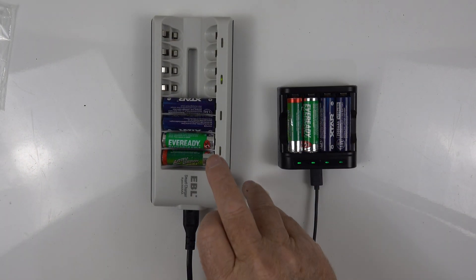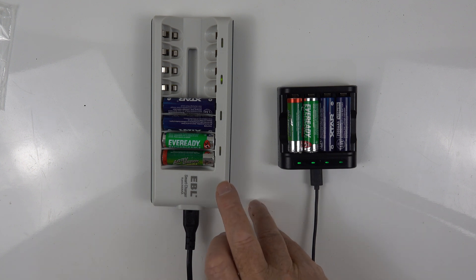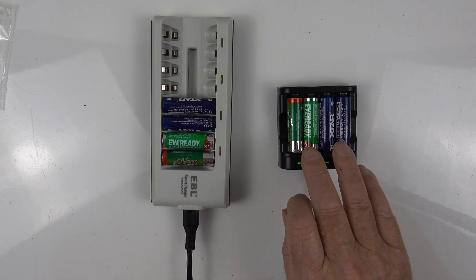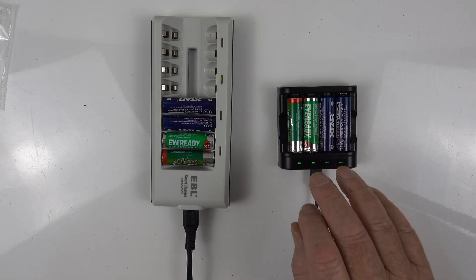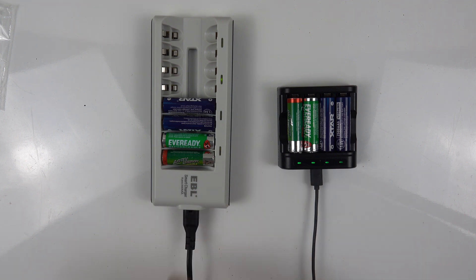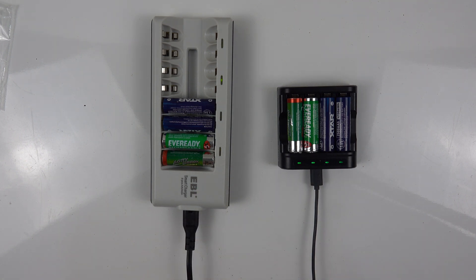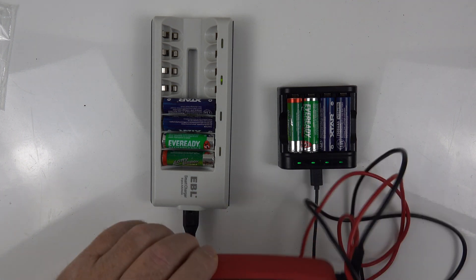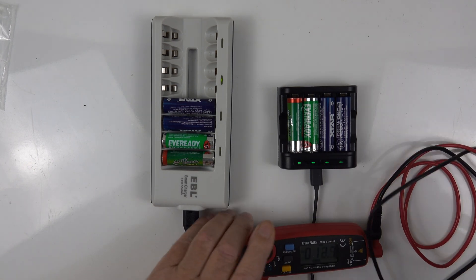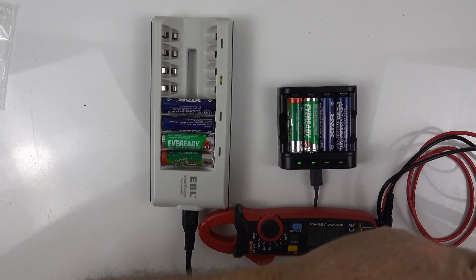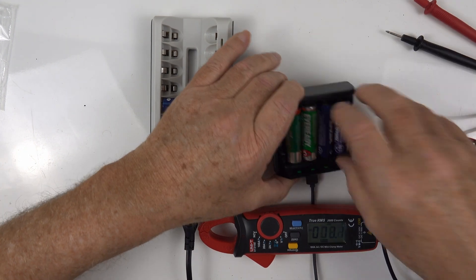Well finally, the nickel metal hydrate batteries on the EBL charger have, well, they're fully charged. It's taken an hour and a half roughly longer than the Xtar. So that's a bit of a concern that's definitely taking its time. Now for the moment of truth, as they say, we've got the little multimeter here and we'll see what we've got. We'll take the batteries out.